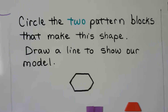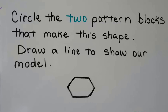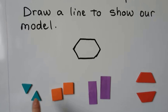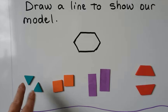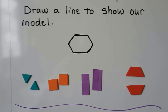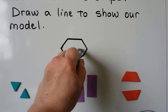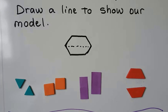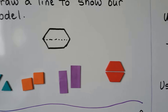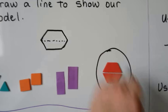Circle the two pattern blocks that can make this shape. So we want to make a hexagon. We can draw a line to show our model and see that if we put two trapezoids together, we'll make that hexagon.